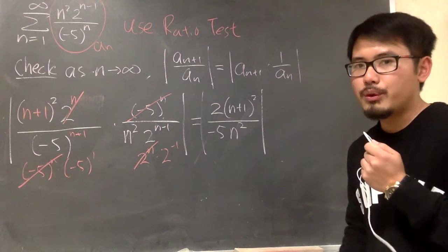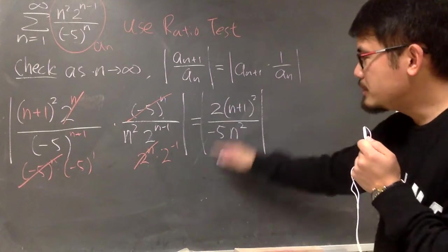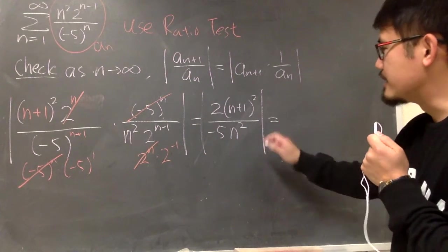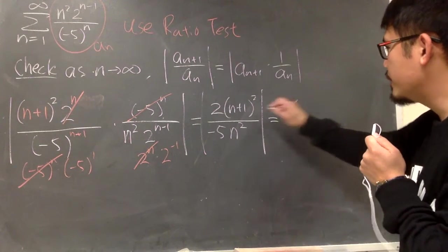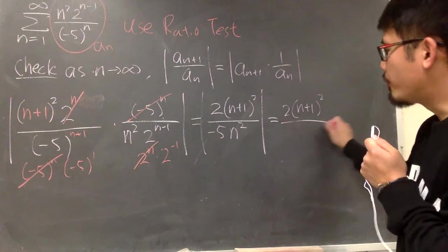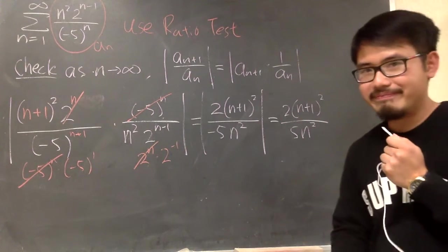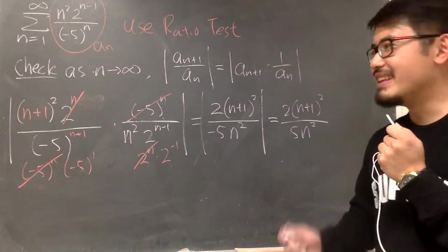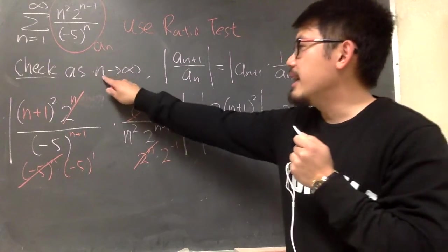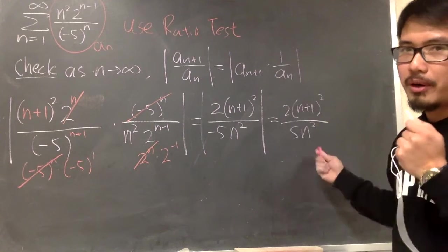And then we still have the absolute value. And now I think we should take care of the absolute value. The absolute value will make this negative disappear. So we can say this is the same as 2 times parentheses n plus 1 square over 5n square. And then, remember, we are taking the limit. All this right here is just algebra. As n goes to infinity, this is just a polynomial of a polynomial.